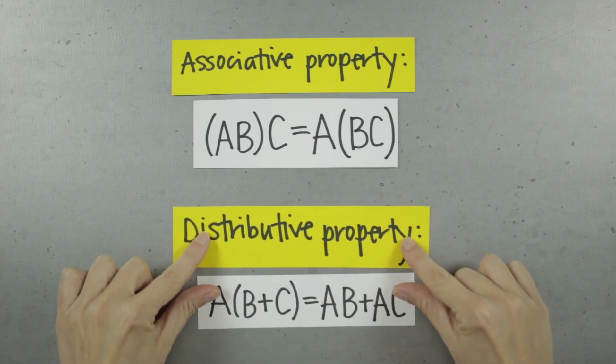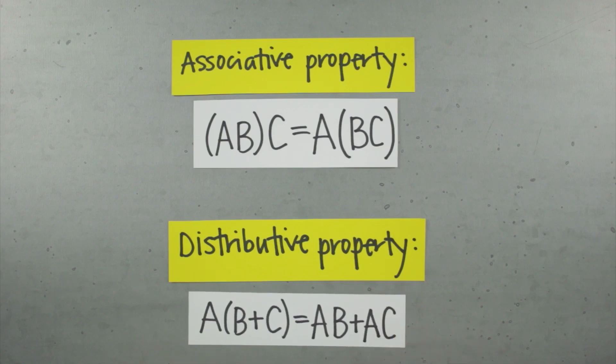For the same reason, the distributive property also holds, so a times the quantity b plus c is the same as a times b plus a times c.